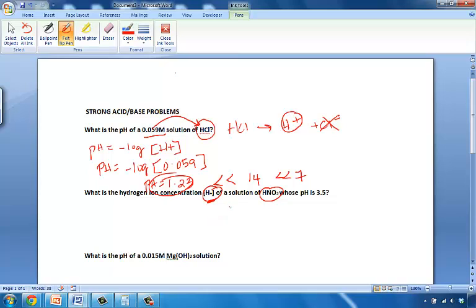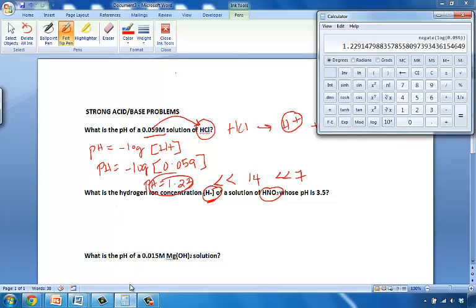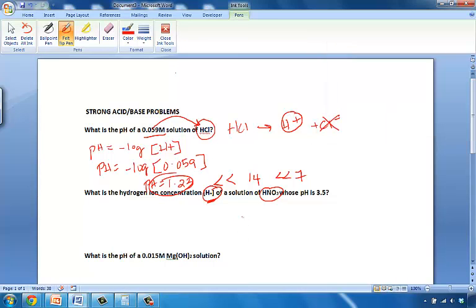Now, since we are given pH and we require H+ concentration, rather than take the log, as we did in the first problem, we're going to take the antilog. The antilog basically is this 10 to the X button on your calculator. So let's see how we can solve for that. So the equation that we will use is H+ concentration, since we're solving for that, will be equal to 10 to the negative pH.